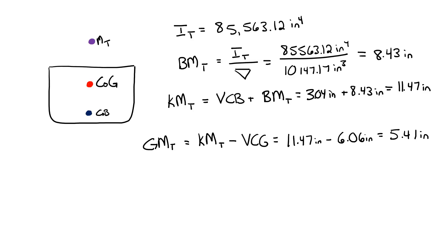It's important to note a few things in this example. My metacentric height is positive, which is what I want — a negative metacentric height would mean my boat is unstable. Also, the ordering of my points is correct: my center of buoyancy is my lowest point, my center of gravity is my second highest point, and then my metacenter is my third highest point. If you can get your center of gravity below your center of buoyancy, that would be amazing, but that's very difficult to do.